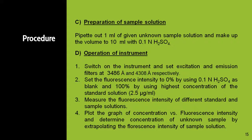To operate the instrument, switch it on and set the excitation and emission filters — that is primary and secondary filters — at 3486 angstroms and 4308 angstroms respectively. First, set the fluorescence intensity to 0% using 0.1 normal H2SO4 as blank. Then set fluorescence intensity to 100% using the highest concentration of the standard solution, which is 2.5 micrograms per ml.